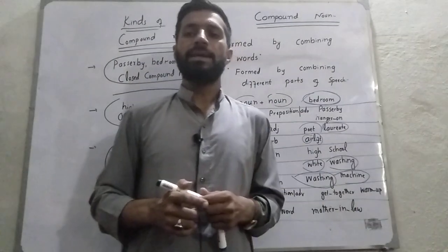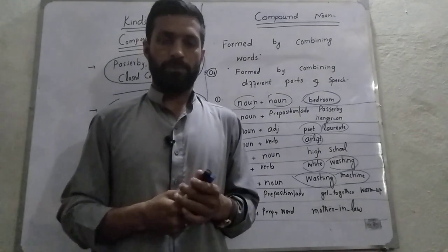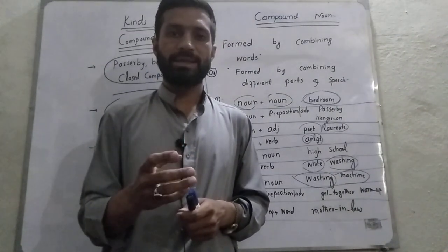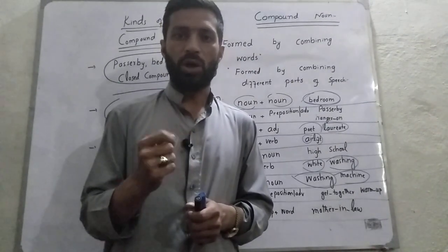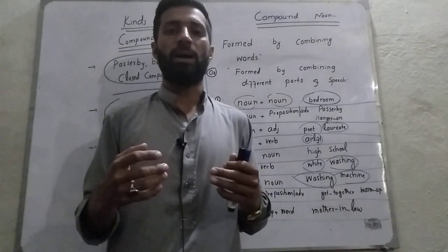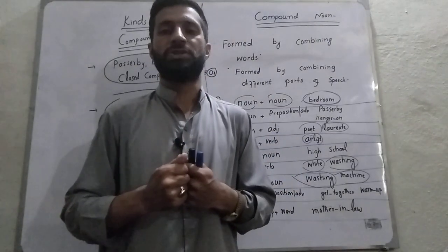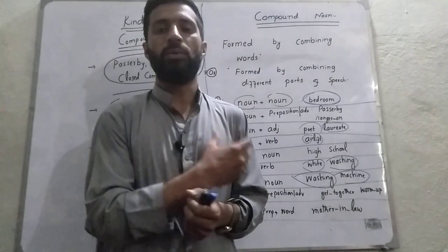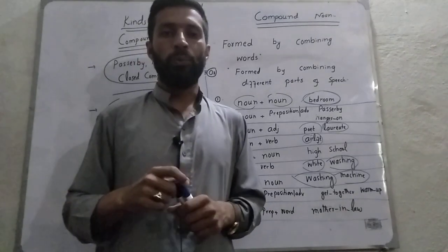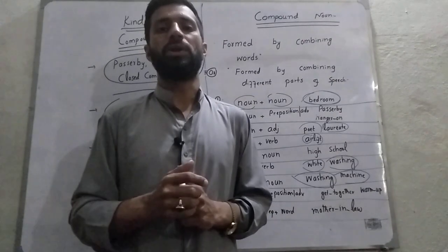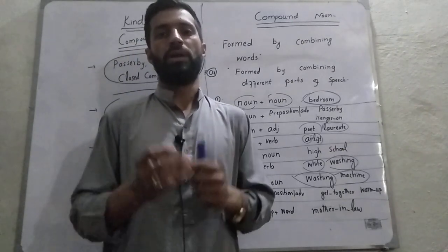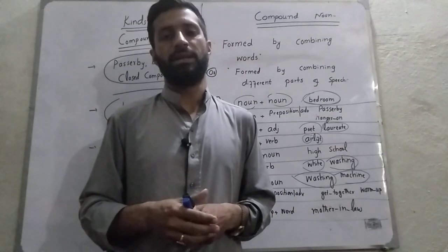To summarize today's video: in the first portion we discussed what a noun is — noun is the name of a place, person, thing, or animal. Compound noun is formed by combining words or combining different parts of speech. We discussed nine cases of how compound nouns are formed, and the three kinds: open compound noun, closed compound noun, and hyphenated compound noun. If you like this video, please subscribe to my channel. Thank you.